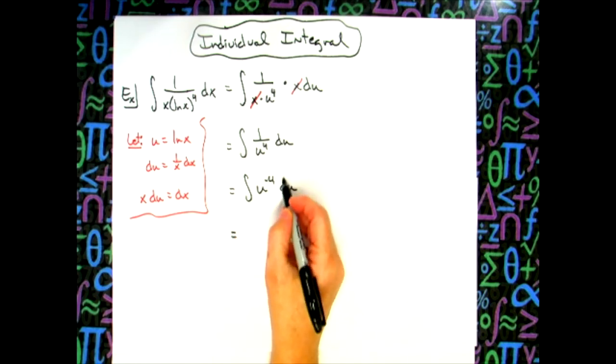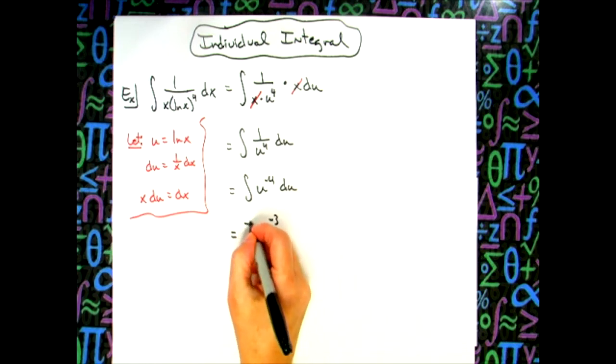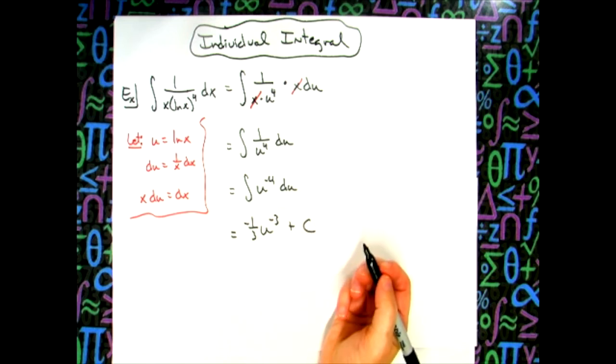So taking that negative 4, adding one to it, I'll have u to the negative 3. And then in front, we'll have that negative 1 third plus c because we finished our integration.